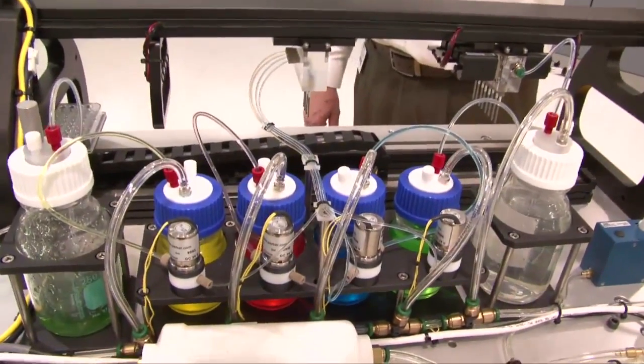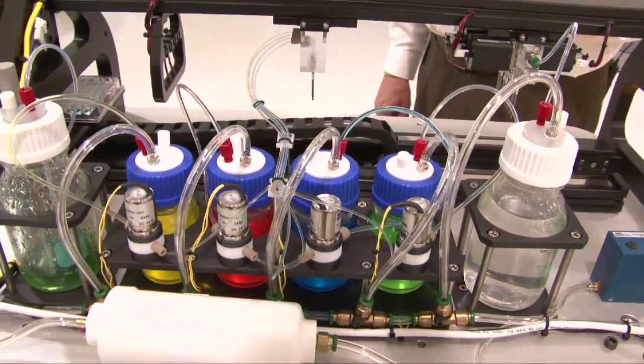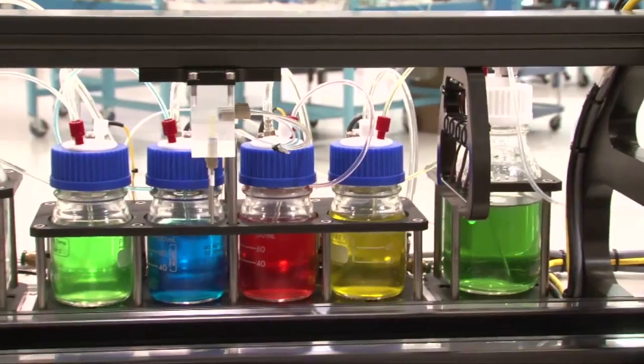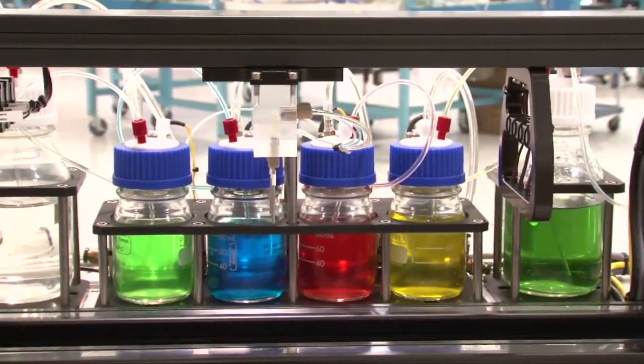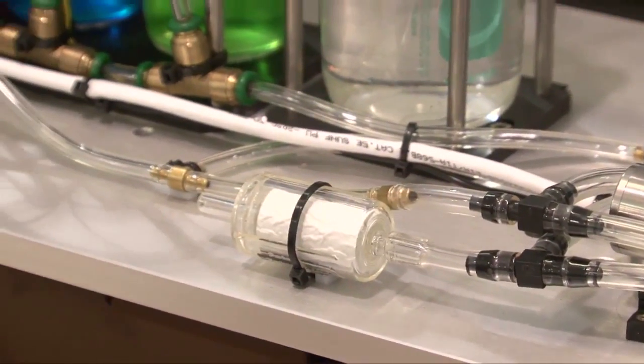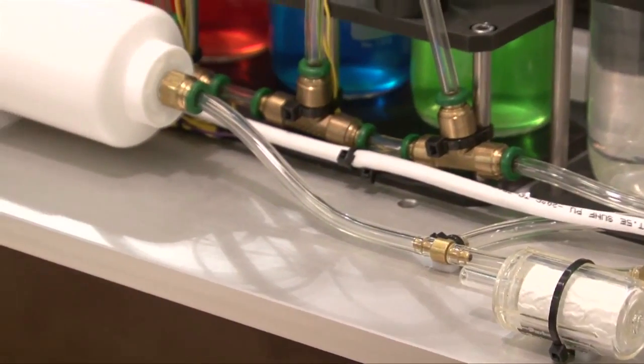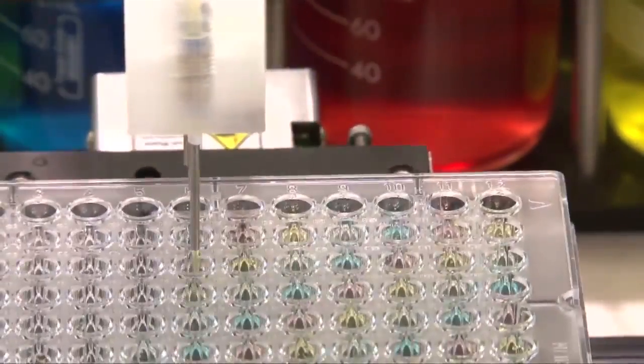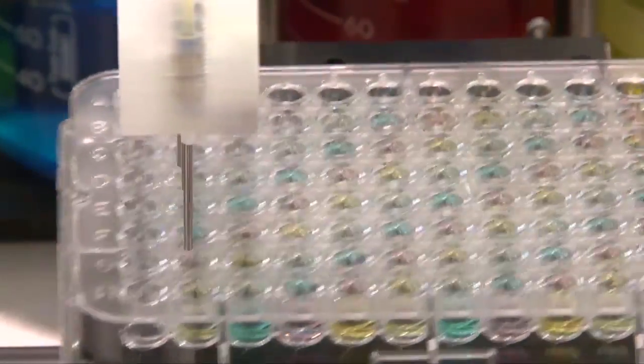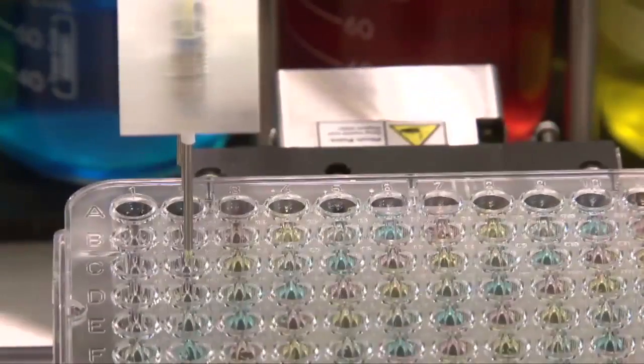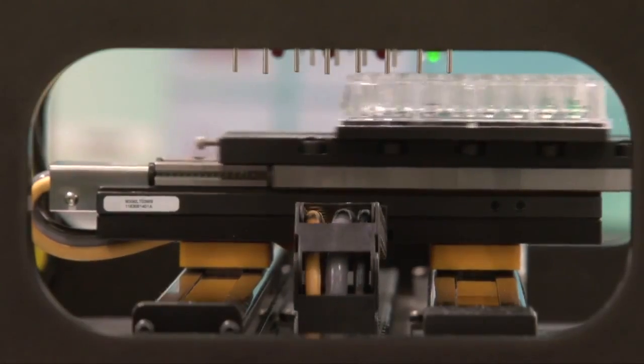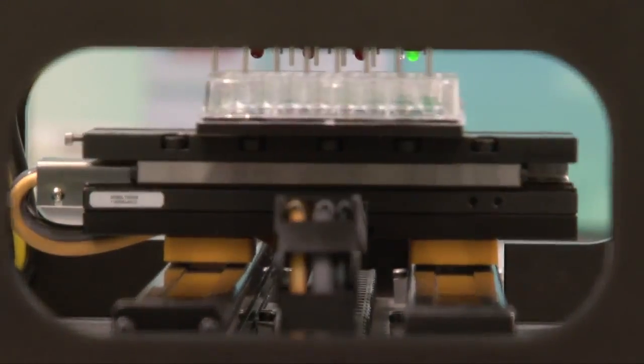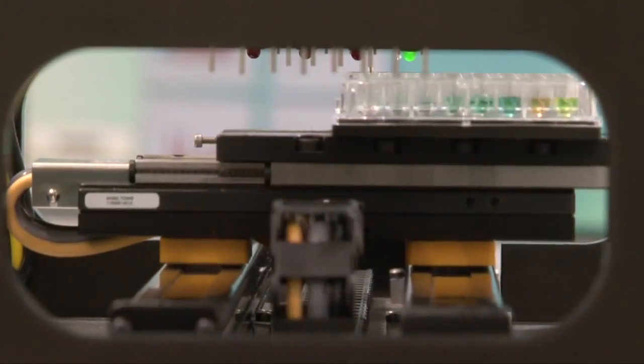The second station that we have is our reagent station. What we have here is four bottles, again being pressurized by the pneumatic pump and the pressure controller. What this allows us to do now is to push reagents, which are simulated by these different colors, through our Teflon isolation valves. These valves are very inert, so they allow us to work with some very caustic reagents. Those are then pushed through these tips into the microwell plates, simulating adding a reagent to that sample.